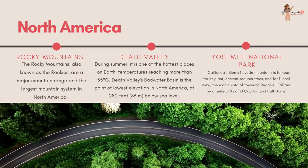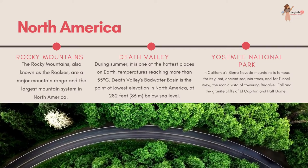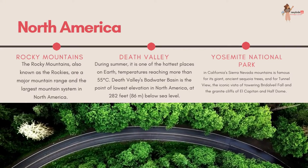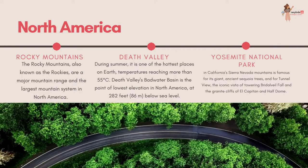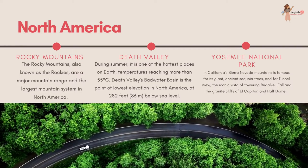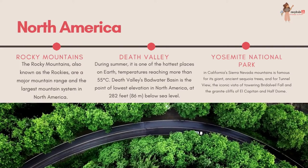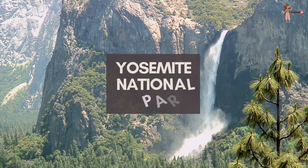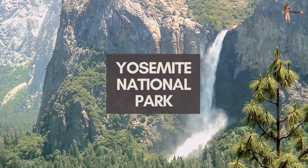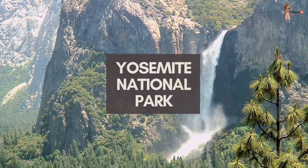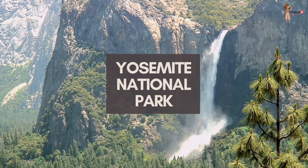Yosemite National Park in California's Sierra Nevada mountains is famous for its giant ancient sequoia trees and for the Tunnel View — the iconic vista of towering Bridal Veil Fall and the sheer cliffs of El Capitan and Half Dome. On 1st October 1890, Yosemite became a national park, and more than 125 years later it's still beautiful.